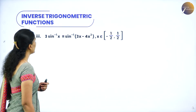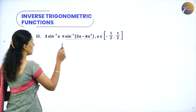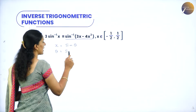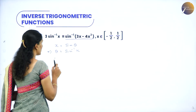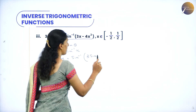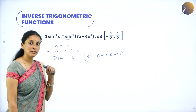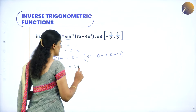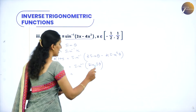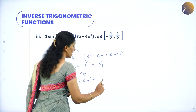Next: 3 sin inverse x equals sin inverse(3x - 4x³). Consider the RHS. Let x equal sin theta, so theta equals sin inverse x. RHS is sin inverse(3 sin theta - 4 sin³theta). Now 3 sin theta minus 4 sin cube theta is sin 3theta. So sin inverse of sin 3theta is 3 theta, which equals 3 sin inverse x — that is the LHS. Hence proved.